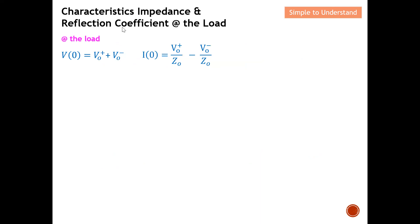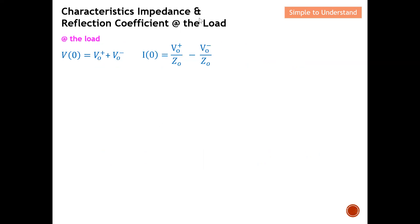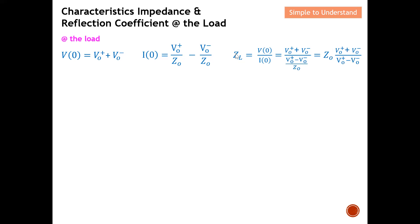Now let's find the characteristic impedance and reflection coefficient specifically at the load. The general equations derived earlier apply at any point on the transmission line. At the load, I use the voltage and current expressions with z equals zero. Taking voltage over current and rearranging gives the characteristic impedance at the load, which simplifies to Z-naught.